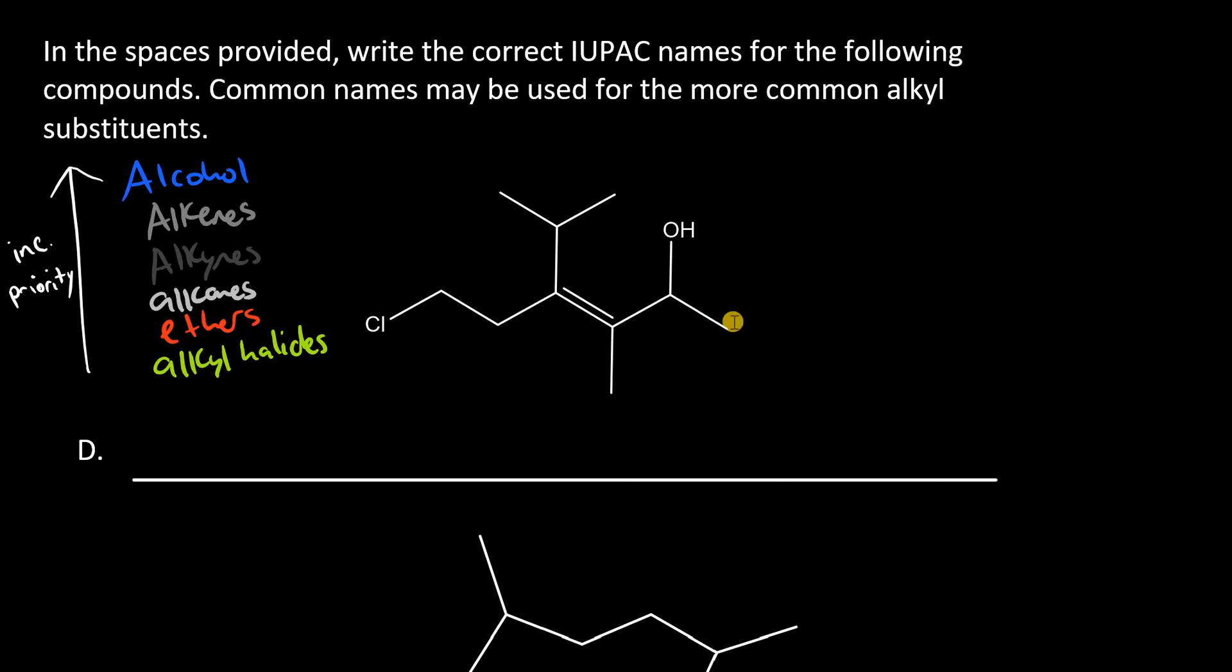The only way to do that is to start from this carbon here and call this carbon 1. So, let's make some quick notes about this compound. At carbon 2, we have an alcohol group, so I'll write 2-ol. At carbon 3, we have a methyl. At carbon 4, I have an isopropyl group. And at carbon 6, I have a chlorine. The double bond is between 3 and 4, so I have to include 3-ene at some point.